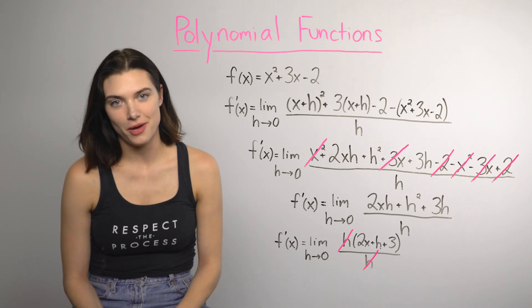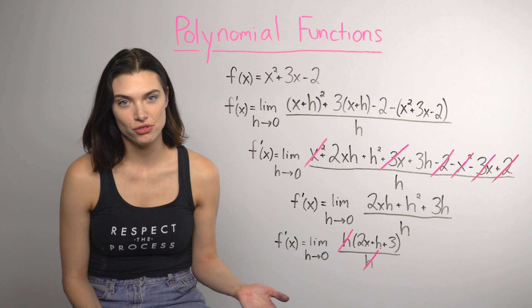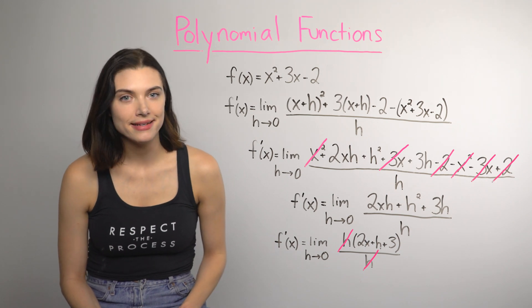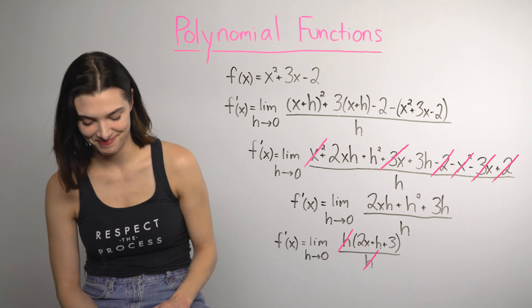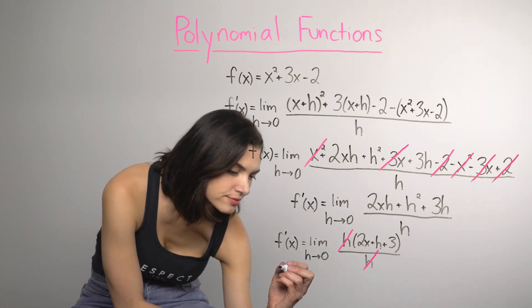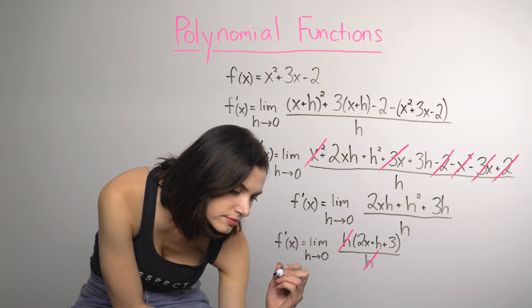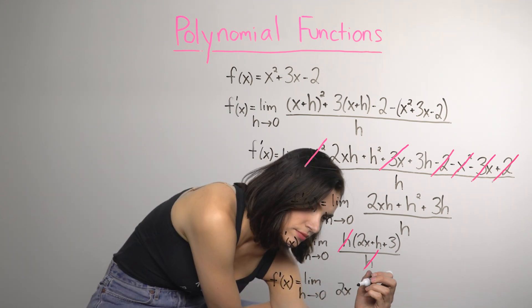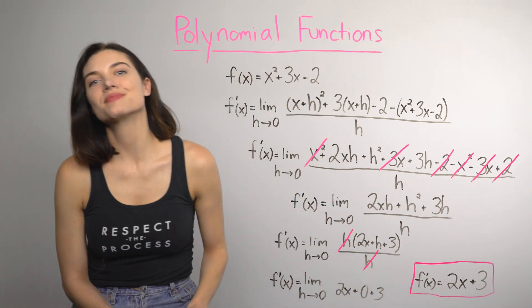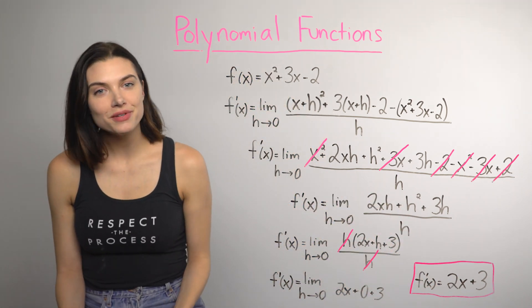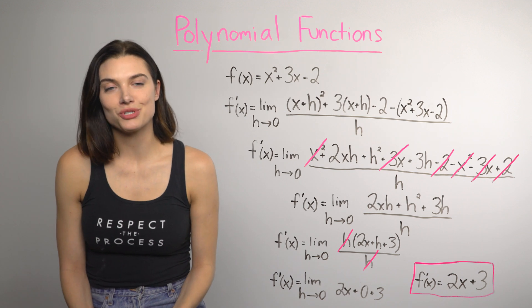Finally, with no h in the denominator, I can try direct substitution. Which, because the limit is as h approaches 0, means just putting 0 in for h. So, the derivative is f prime of x equals 2x plus 3.